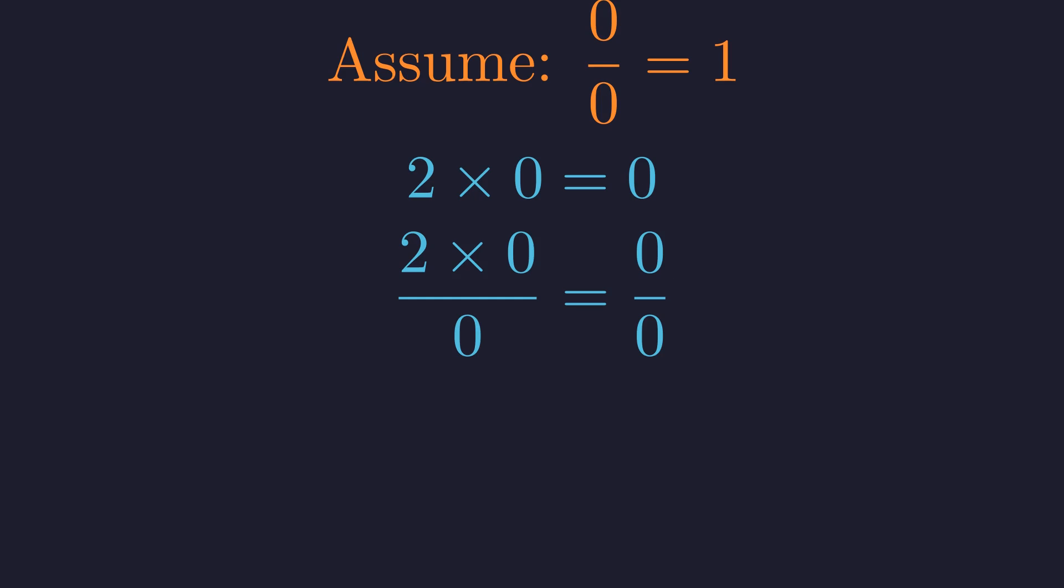Both sides are now division by zero expressions. Now here's the key move. On the left side we can rewrite this fraction. When we have a product in the numerator divided by something, we can separate it out. This becomes two multiplied by the quantity zero divided by zero. This is a valid algebraic rearrangement.